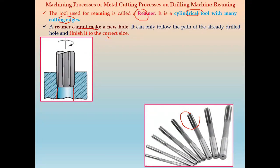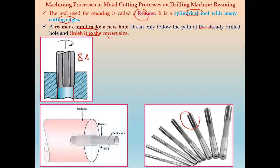The reamer cannot make a new hole; it only follows the path already drilled and finishes it to the correct size. For example, if we have an 8 mm drill tool, we can achieve the exact 8 mm size using the reamer. So we have the already drilled hole, and the reamer makes it the desired size with a correct finish.